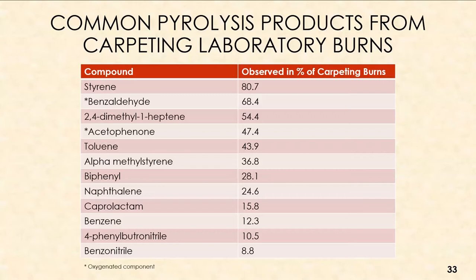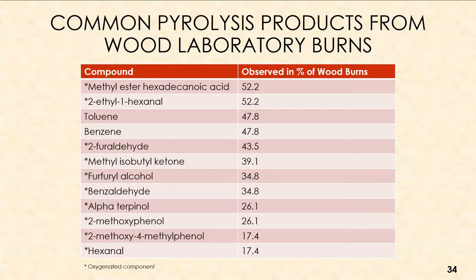For the pyrolysis products identified across the different substrate groups: for carpeting, the majority of products observed were styrene, benzaldehyde, and 2,4-dimethyl-1-heptene, all above 50%. There were not necessarily many oxygenated components — it was a large mixture of different materials — but styrene was consistently identified across the majority of carpet burns, which is very important when making comparisons.